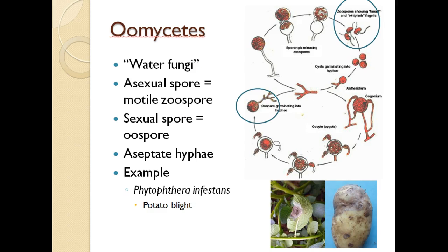Some categories of fungi begin with oomycetes — the water fungi. We don't use these in food production. Their asexual spore is known as a zoospore, their sexual spore is an oospore, and they have aseptate hyphae. An example is Phytophthora infestans, which causes potato blight and tomato blight. There have been years in western Pennsylvania with tomato blight where tomatoes turn black and drop off the vine. Phytophthora also caused the great potato blight in Ireland, which brought many immigrants to the United States — including the Kennedy family.